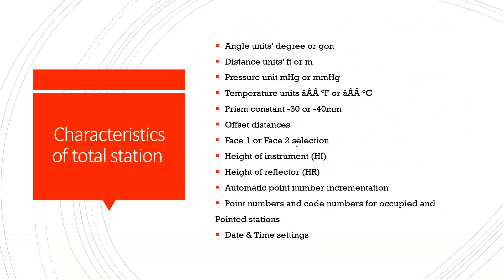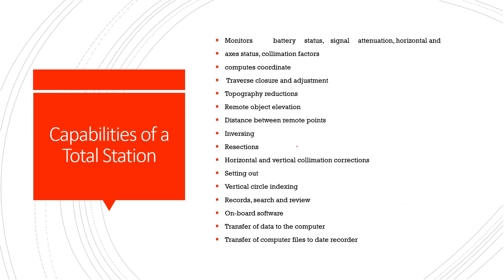The characteristics of the total station include: angle units in degrees or gon, distance units in feet or meters, pressure units in mHg or mmHg, temperature in Fahrenheit or Celsius, prism constant of minus 30 or minus 40 mm, offset distance, phase 1 or phase 2 selection, height of instrument, height of reflector, automatic point number, incrementation, point numbers and code numbers for occupied and sighted stations, and date and time settings.